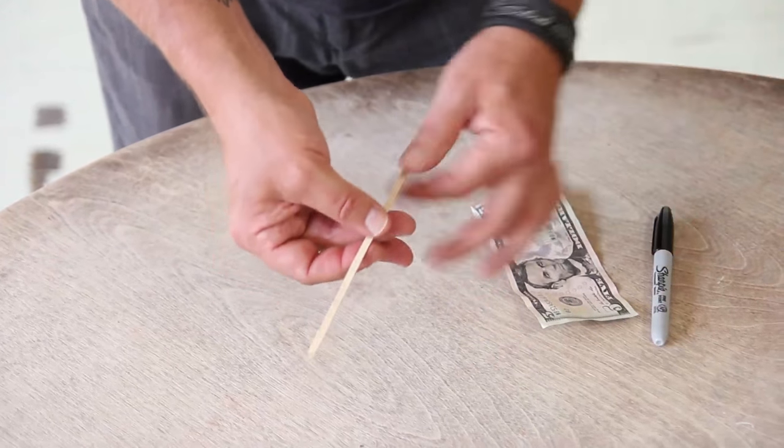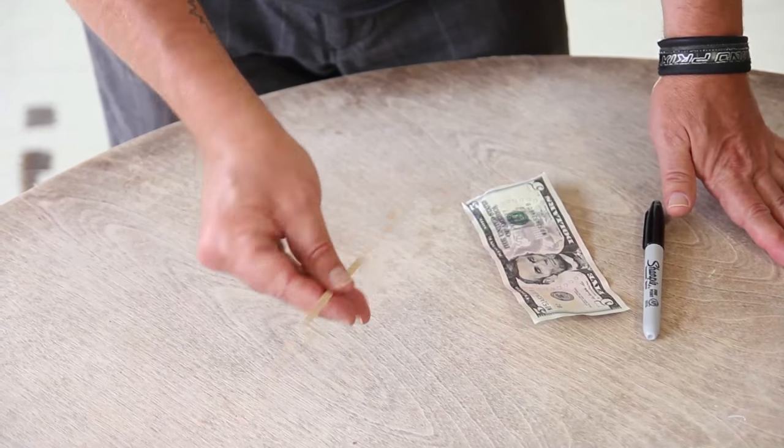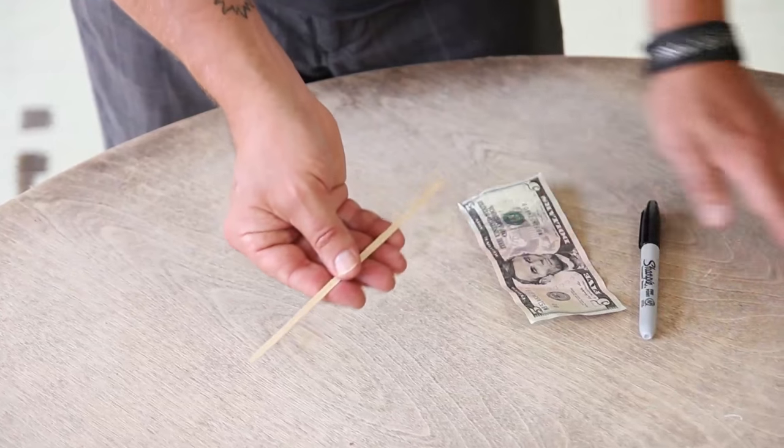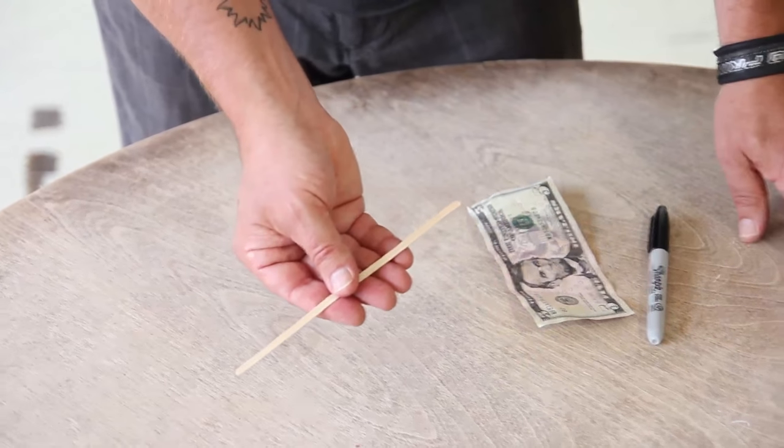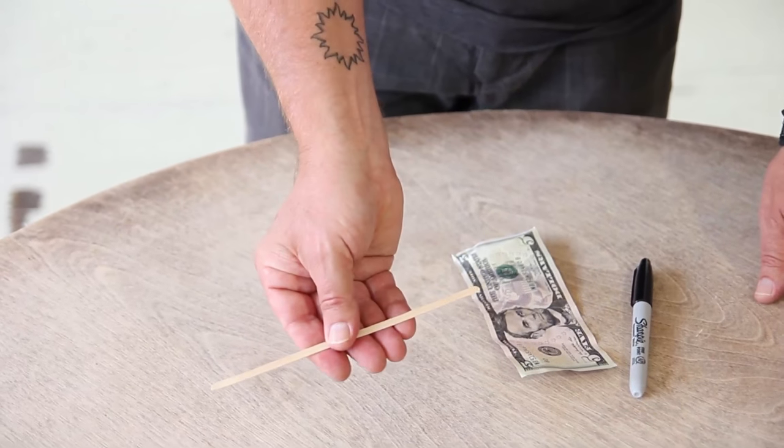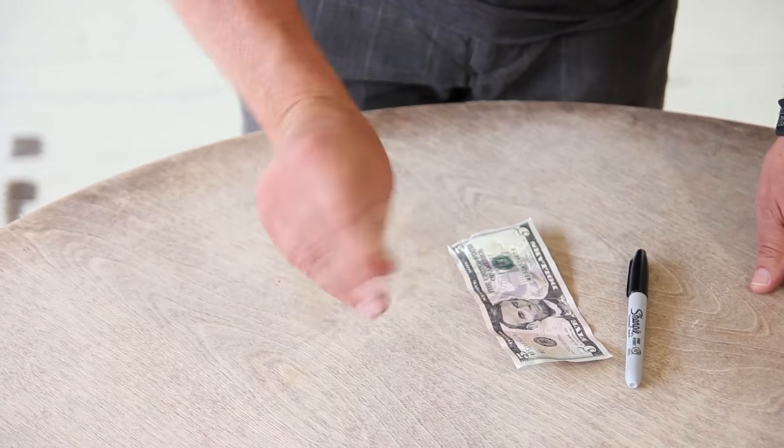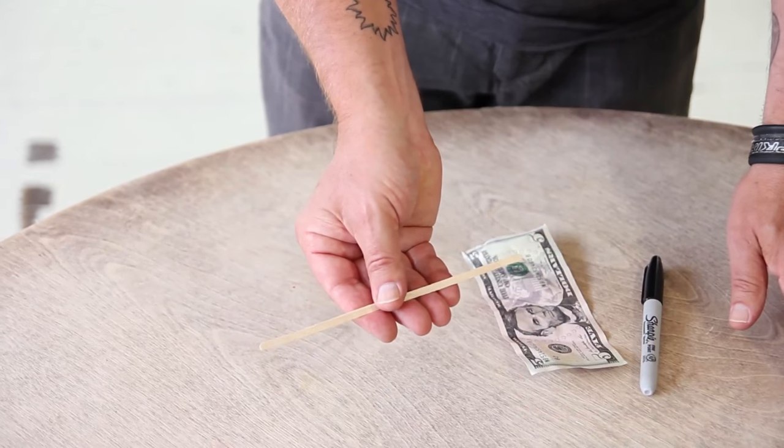You start off by taking the stir stick, and you don't have to do the paddle move here. And the paddle move is, as I turn my hand over, I'm going to push with my thumb and roll this over once. But notice, if I do the roll as I do the turn, you can't see the X, because I'm showing you only one side twice, because I'm doing the secret roll.